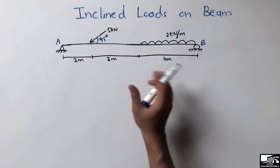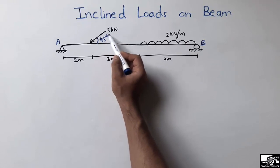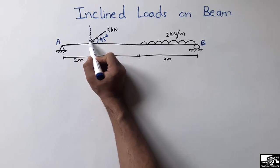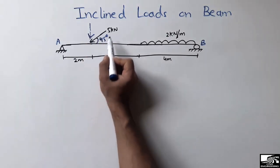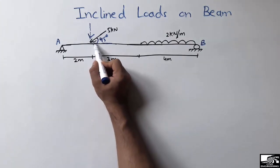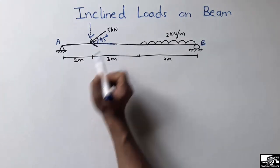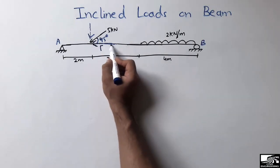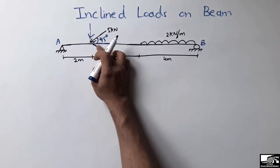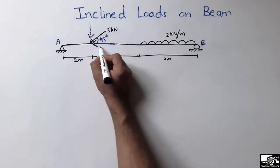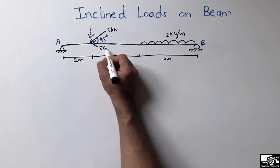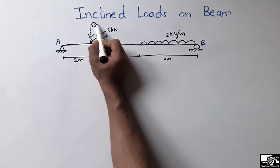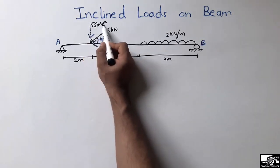To find the support reactions for this beam, first we need to resolve this inclined load. There are two components of this load — one is the vertical component and one is the horizontal component. The horizontal component will be 5 cos 45 degrees, and the vertical component will be 5 sin 45 degrees.